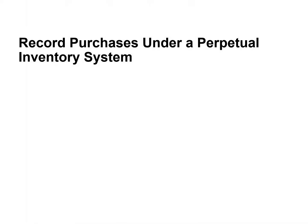Companies use one of two systems to account for inventory: a perpetual or periodic inventory system. In this video we will focus on recording purchases under a perpetual inventory system.